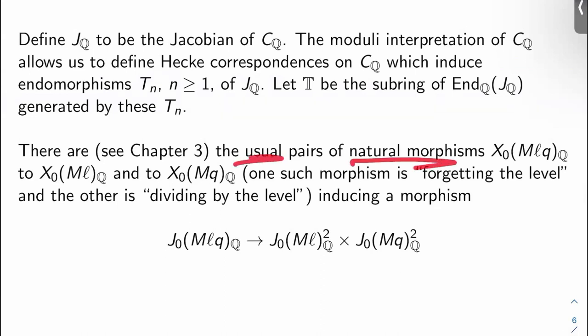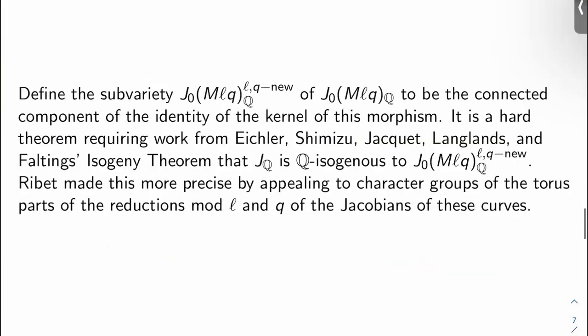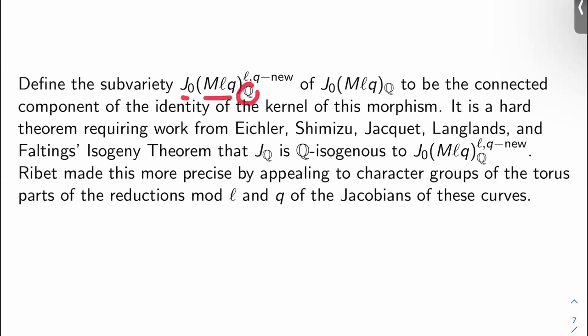There are in chapter three of my notes, we already talked about this, the usual pairs of natural maps from the modular curve X_0(Mℓq), its rational model to X_0(Mℓ) over Q and X_0(Mq) over Q. One of the maps is forgetting the level and the other one is dividing by the level. So we've talked about this before. Okay, so we'll call these the degeneracy maps sometimes. Okay, a map of curves will give me a map of Jacobians. Here's the morphism. It's a morphism from J_0(Mℓq) over Q to J_0(Mℓ)² over Q to J_0(Mq)² over Q. Okay, so we've already seen in chapter three how this works.